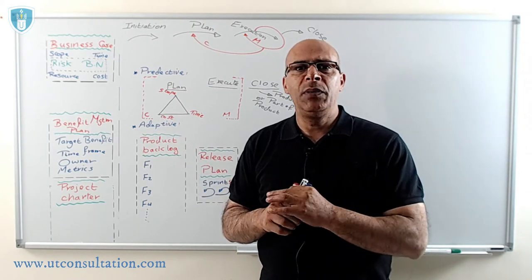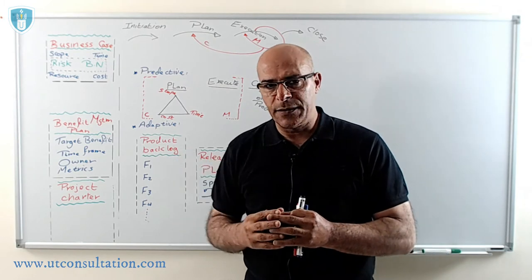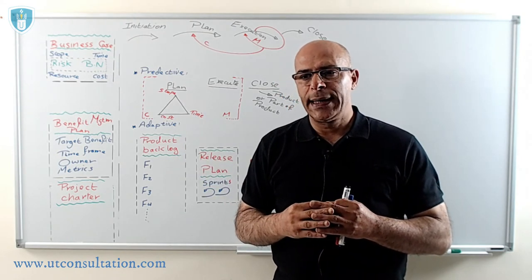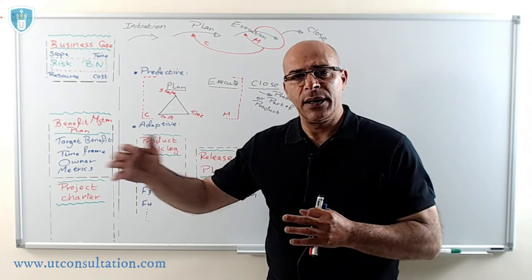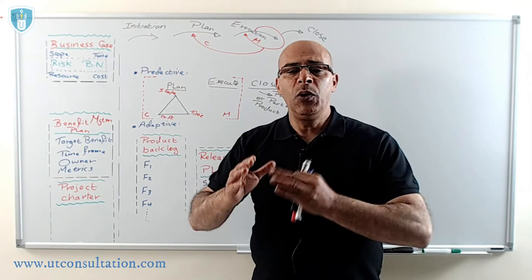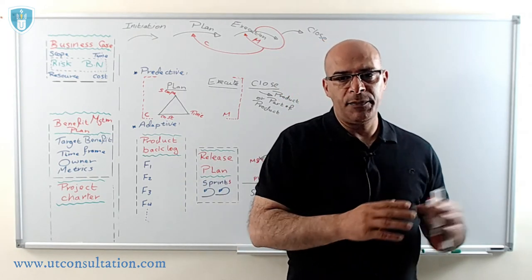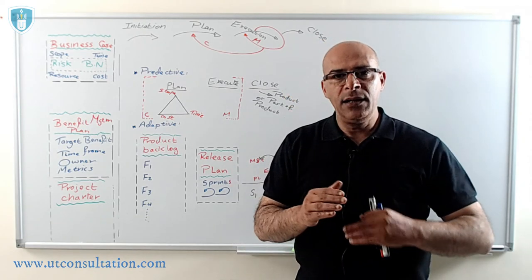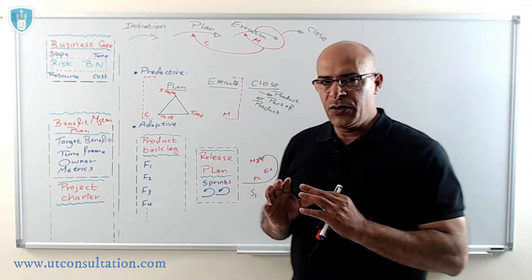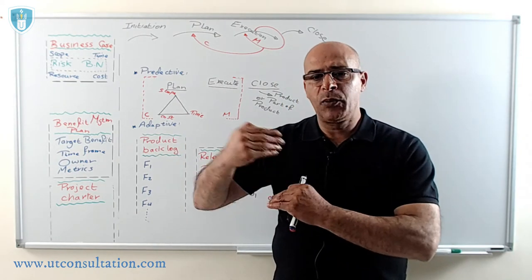What matters to us is the product, not the project — ultimately we care about the product. In the adaptive approach, the product is not fully defined upfront, and this may be the reason for high frequency of change requests. Requirements are evolving, not clear or agreed upon like in predictive. In this case, there is no full upfront planning before execution — planning goes through stages called progressive elaboration: plan, execute, plan, execute, until we arrive at the product. The first key template used is the product backlog. The product backlog is a document that comes after the project charter and before what is known as release planning.